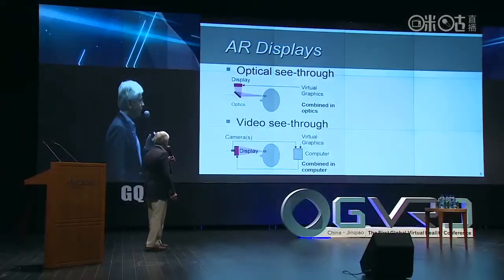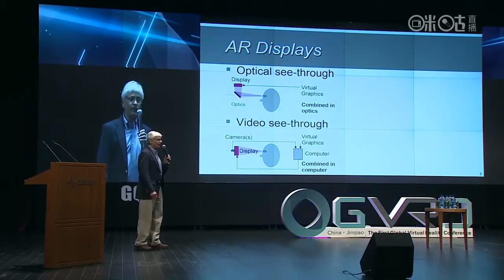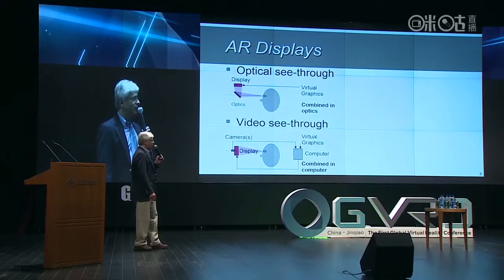The second kind is what we call video see-through, in which you are looking at a display but the real world is seen by cameras. The camera view and the virtual graphics are combined in the computer and then presented on the display — combined in optics versus combined in the computer. And then finally, we can actually project into the real world, spraying photons into the real world, doing the combination in the environment itself.